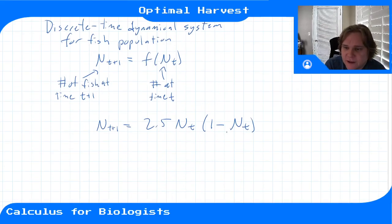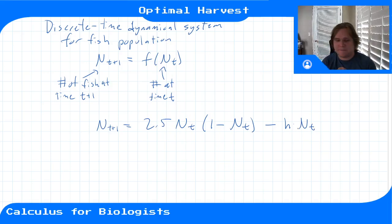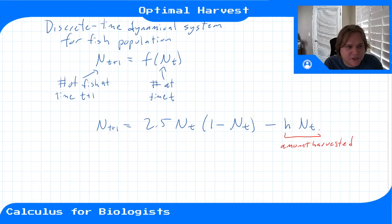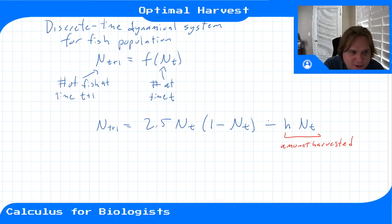We also have a harvest term: minus h · n_t, where h is some percent times the number of fish in the population at time t. We take them out of the population so they can no longer reproduce and produce the next generation — we're just fishing them out and they're turned into cat food or whatever.